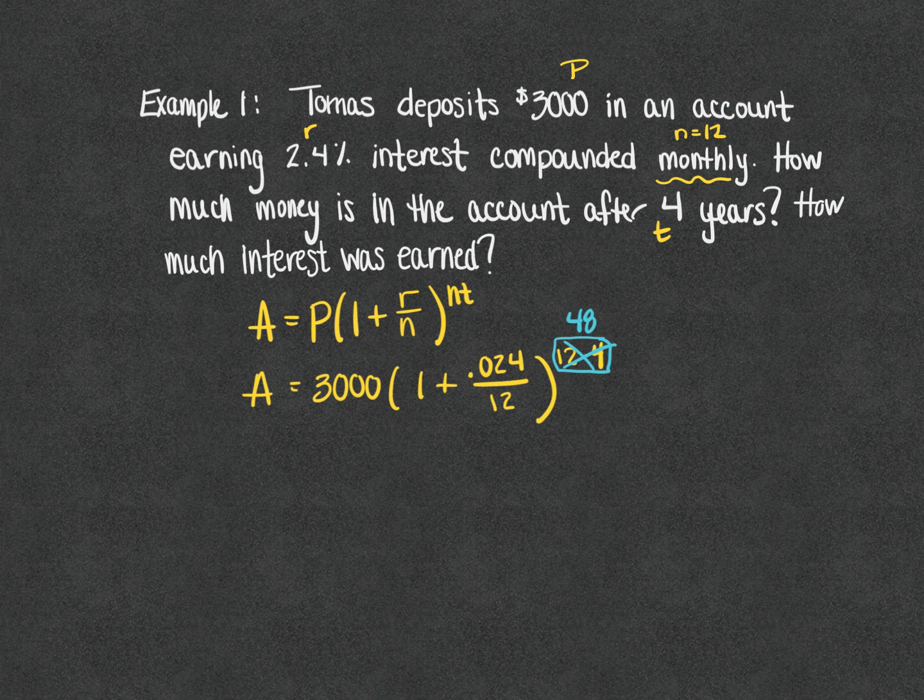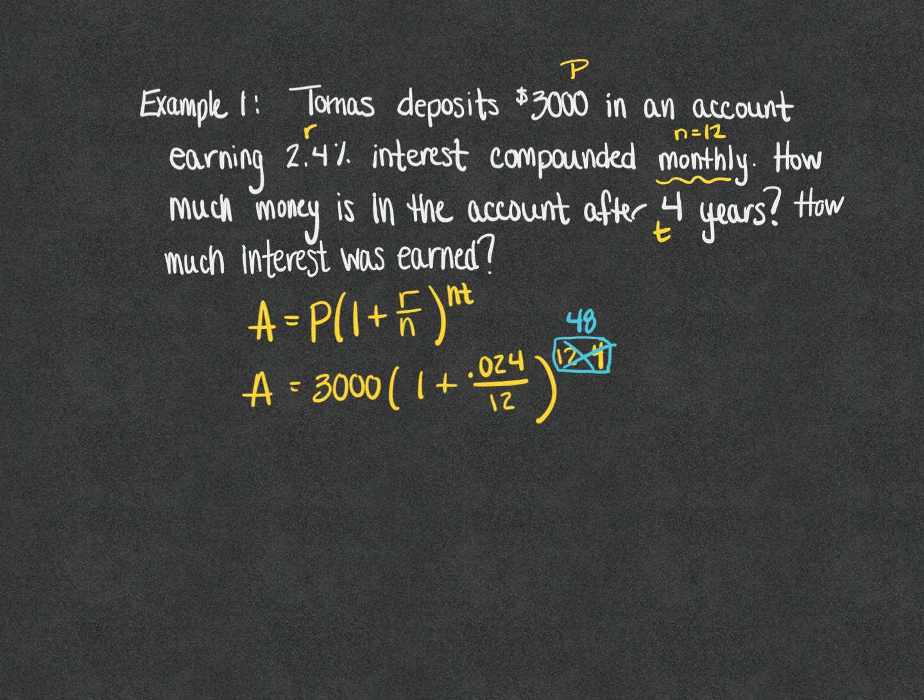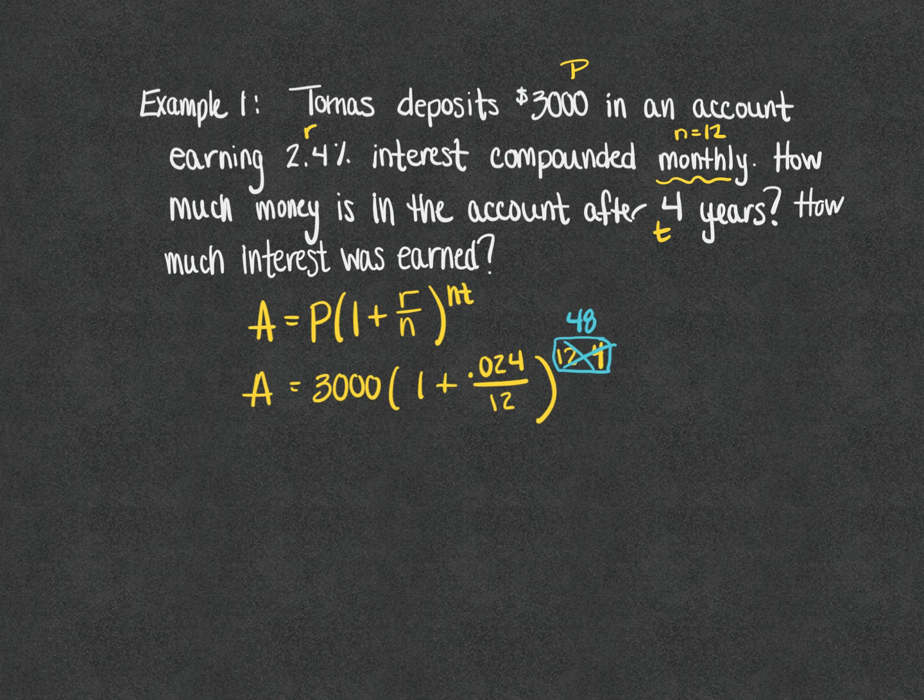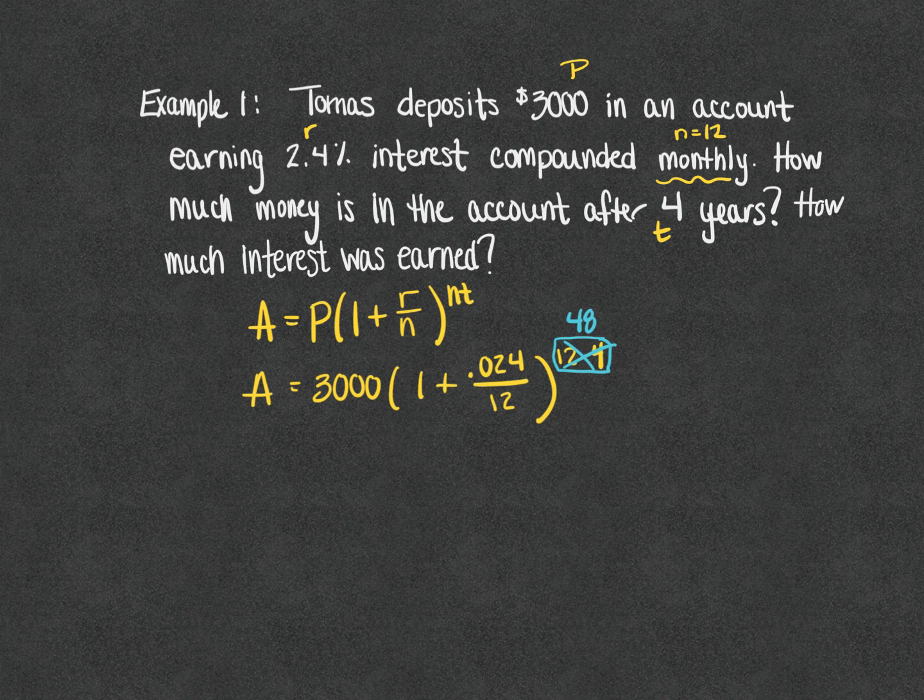On your calculator you're going to want to type 3000 and then your parentheses, 1 plus 0.024. If you have a fraction bar use it, put the 12 on the bottom. If you don't have a fraction bar the division sign will work just as nicely. Then arrow over, enter your parenthesis and then raise your answer to the 48th power.